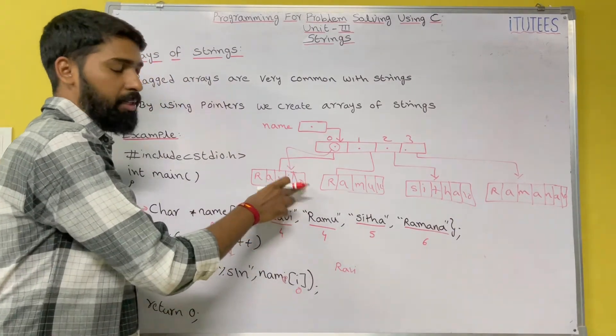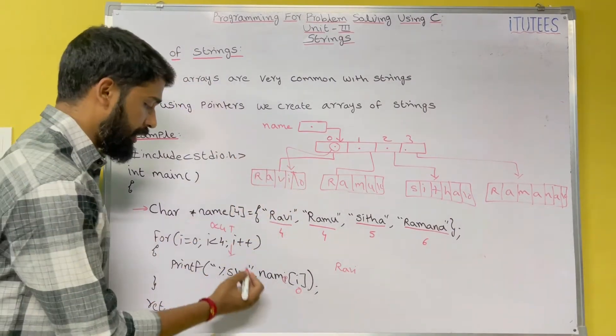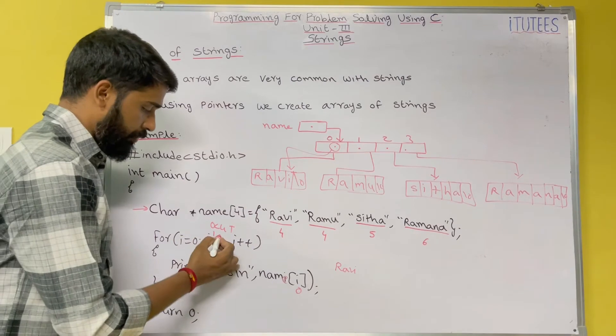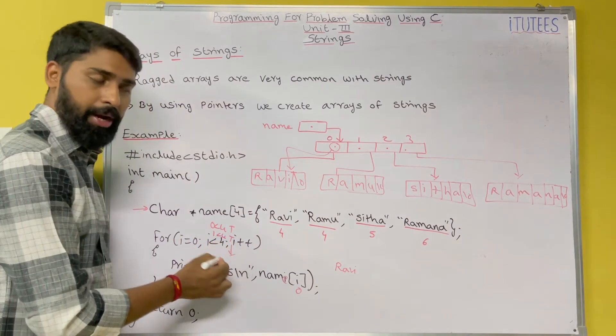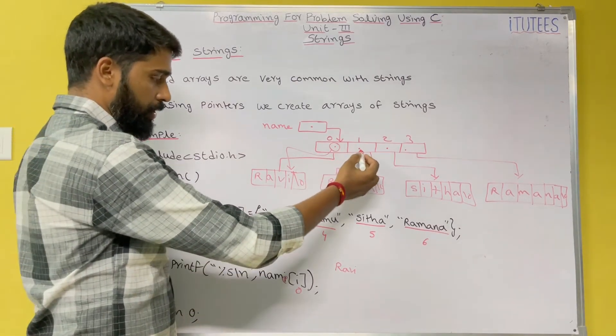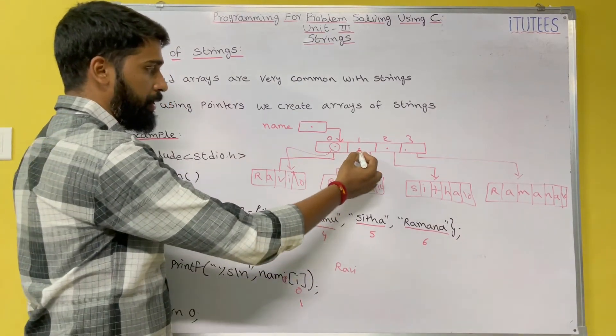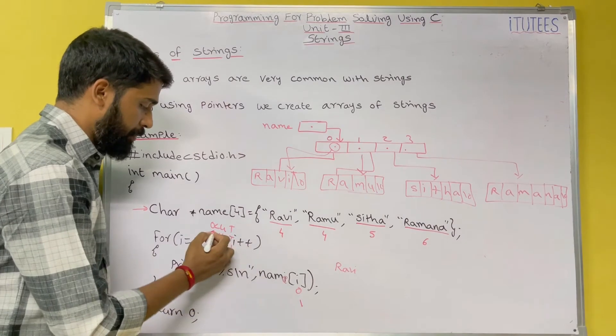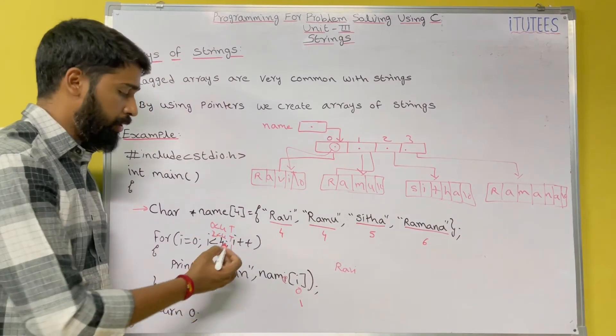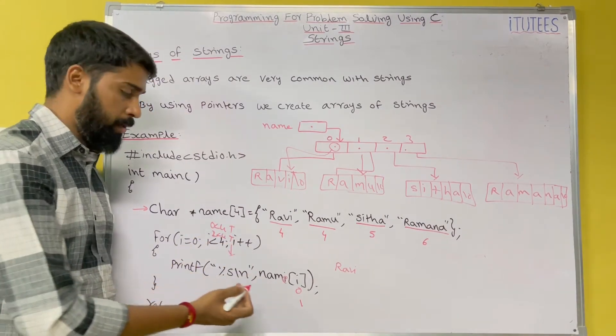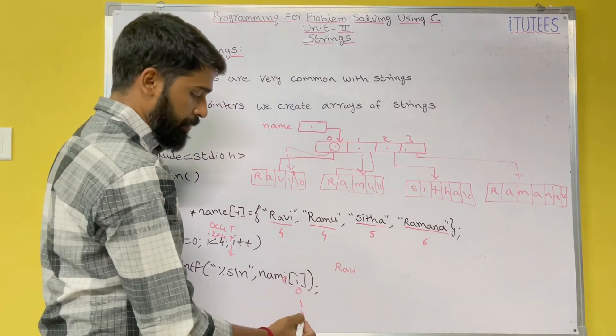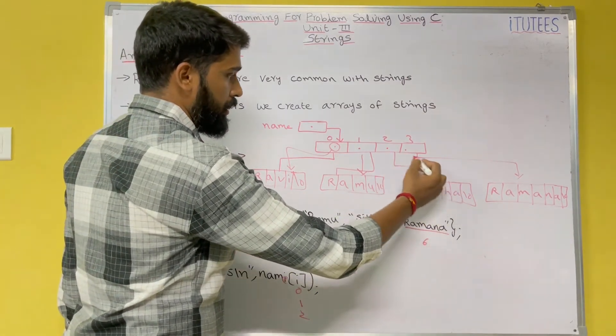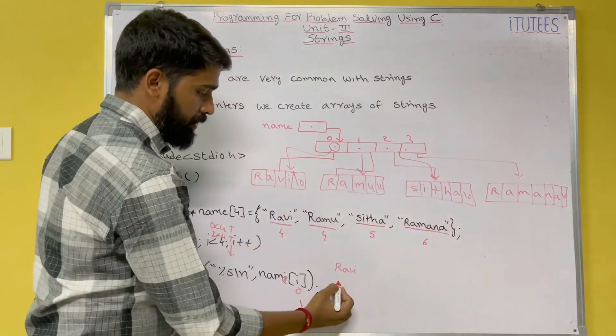In next iteration, it becomes 1. 1 less than 4, true. Enter into the block. Name[1], you go to here and print Ramu. Next iteration, it becomes 2. 2 less than 4, true. Enter into the block. Print name. What is name[2]? It indicates Sita. So it prints Sita.